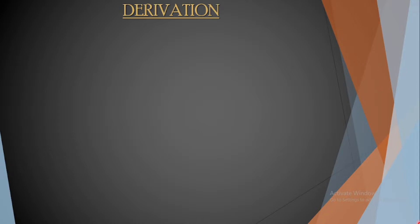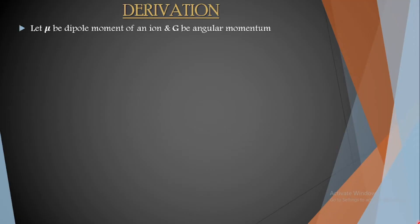As we know, if omega equals omega_L then resonance takes place. Let us derive it using some standard equations of motion. For that, let us consider mu to be the dipole moment of an ion and G be the angular momentum corresponding to it. Whenever I use bold letters like mu and G, it is understood that they are vector quantities, because mu has its own direction as well as magnitude — it acts as a vector. Similarly, angular momentum is a vector. Every bold letter means it is a vector quantity.